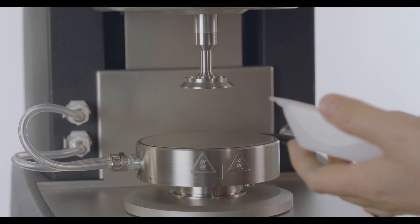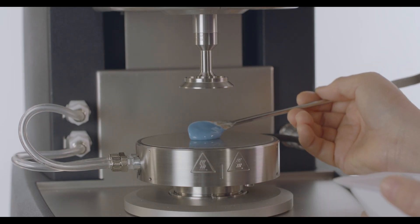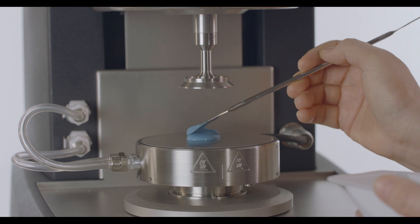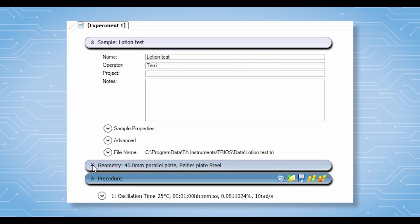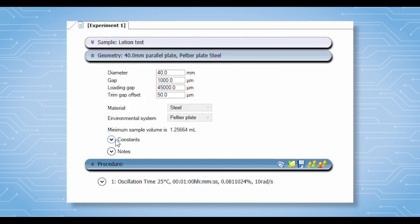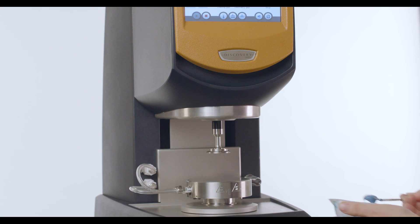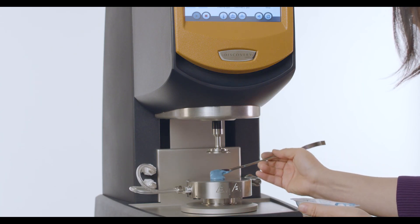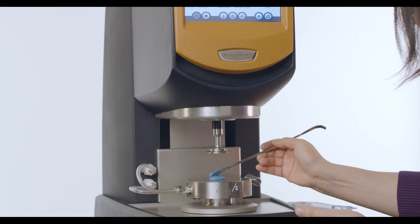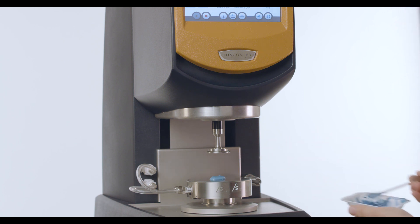When loading a liquid or soft solid sample onto a parallel plate or cone and plate geometry, TRIO software will provide you with the information about the minimum required volume. Unless you have a very limited amount of sample, it is always good to load slightly more sample than what is required, and then trim the excess amount.